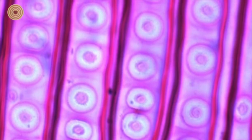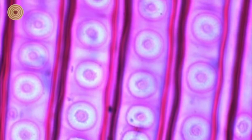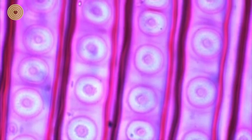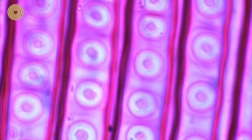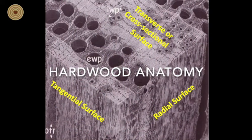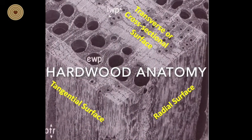Hardwoods do not have the thickened torus region in their pits and they use a different type of system to stop sap flow if it becomes necessary. And we will discuss this in a minute. And with that segue, now let's move on to hardwood anatomy.